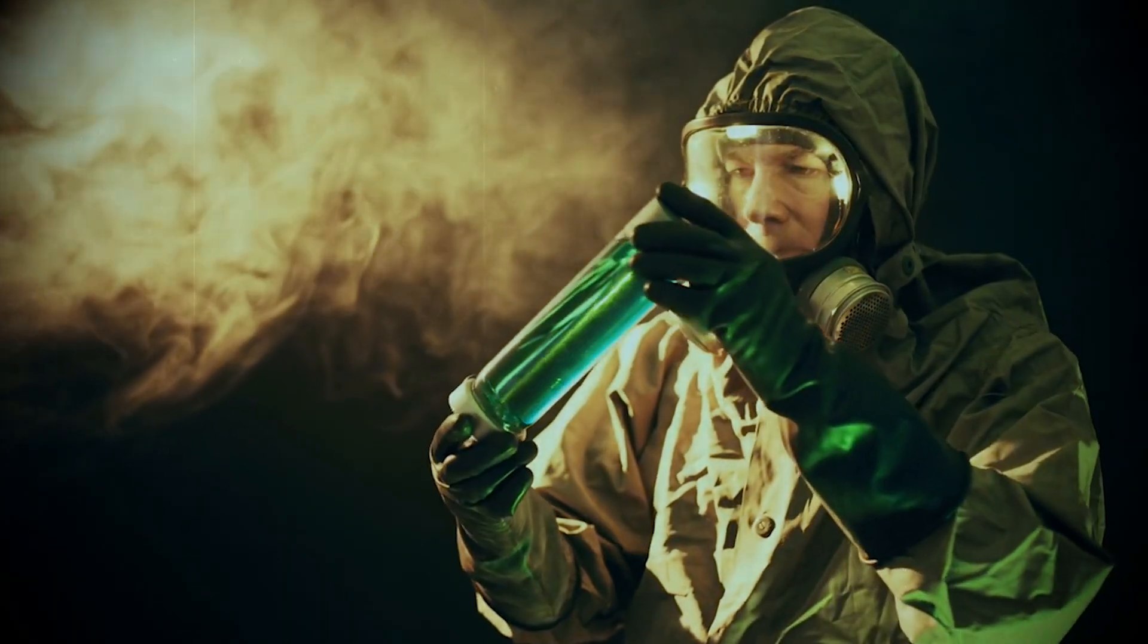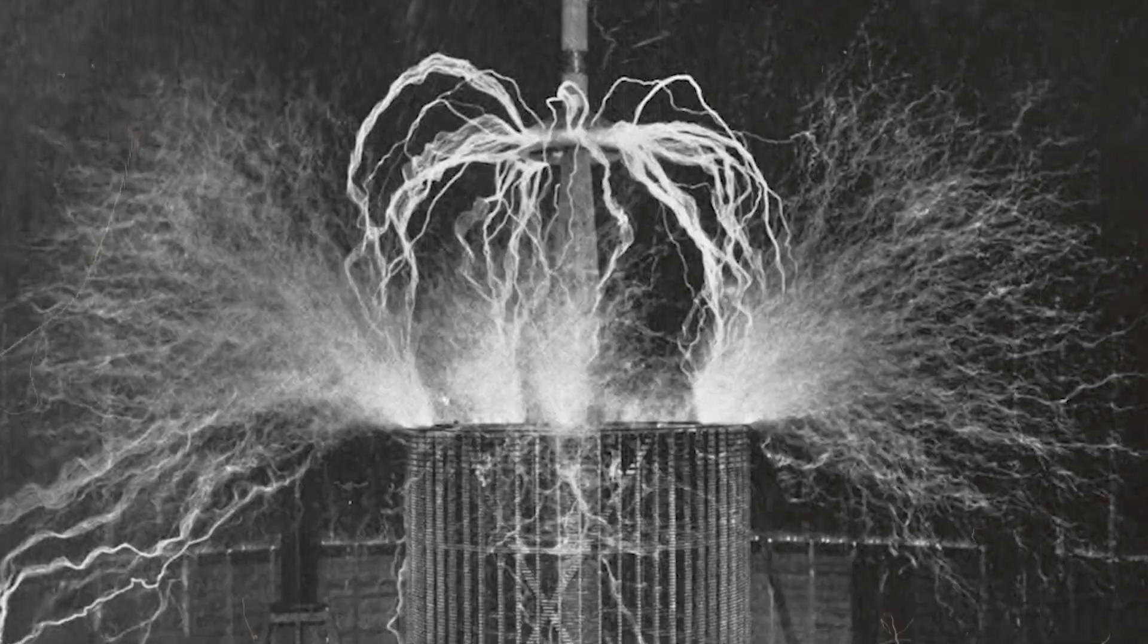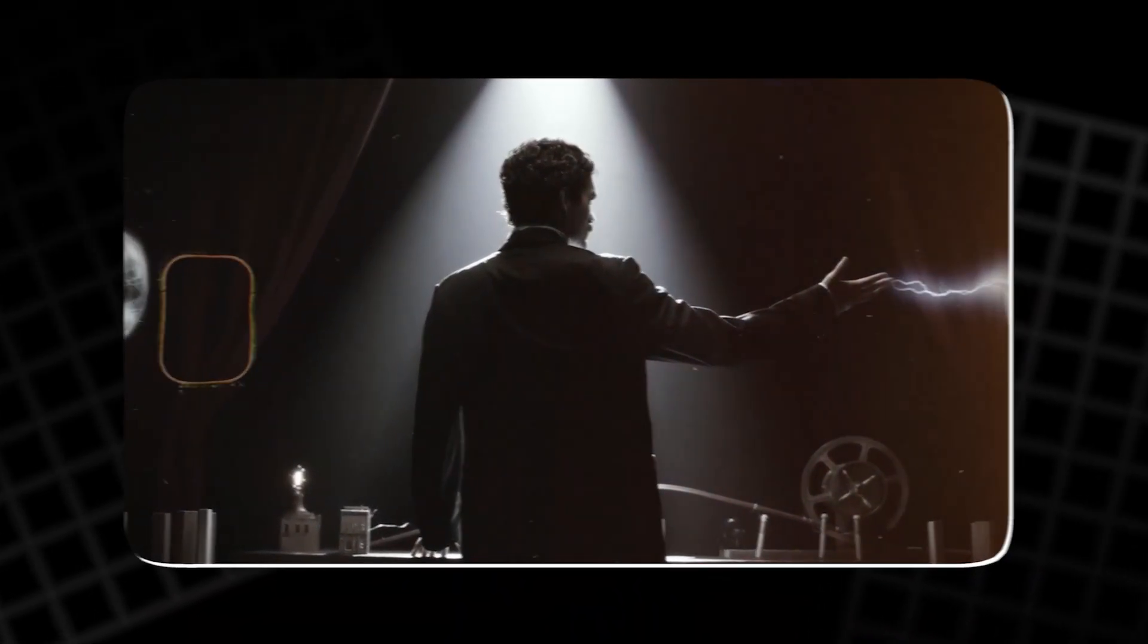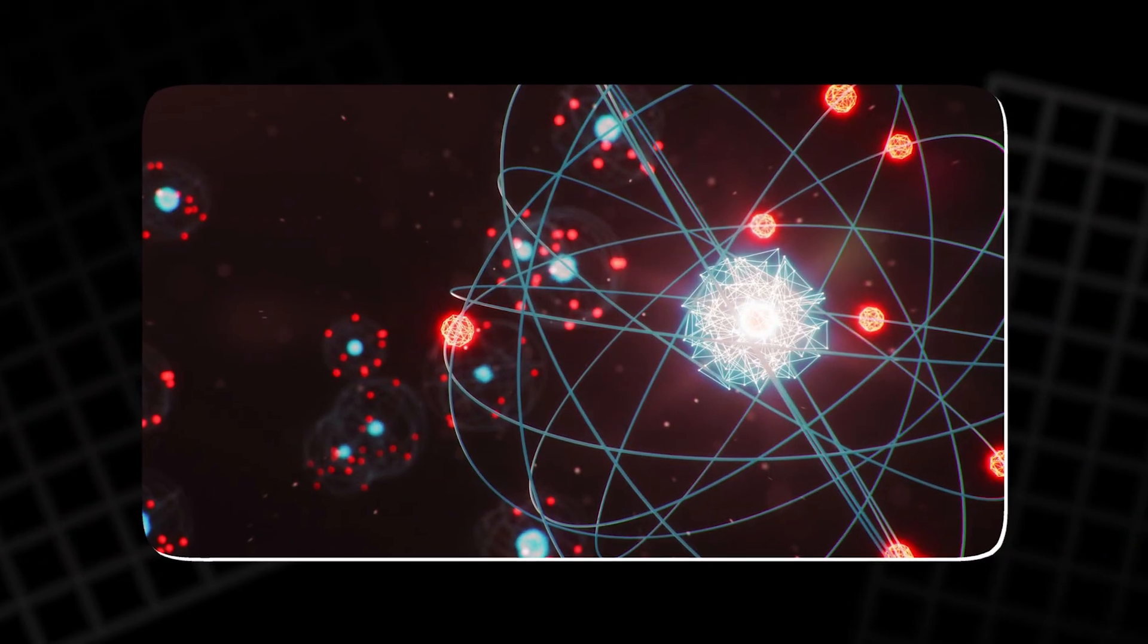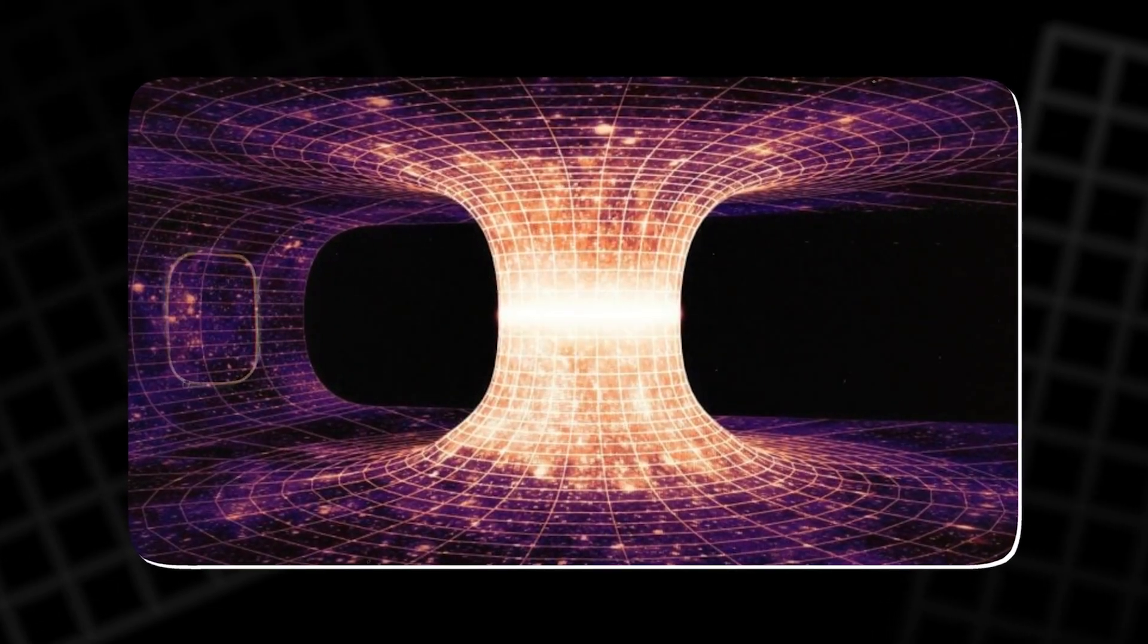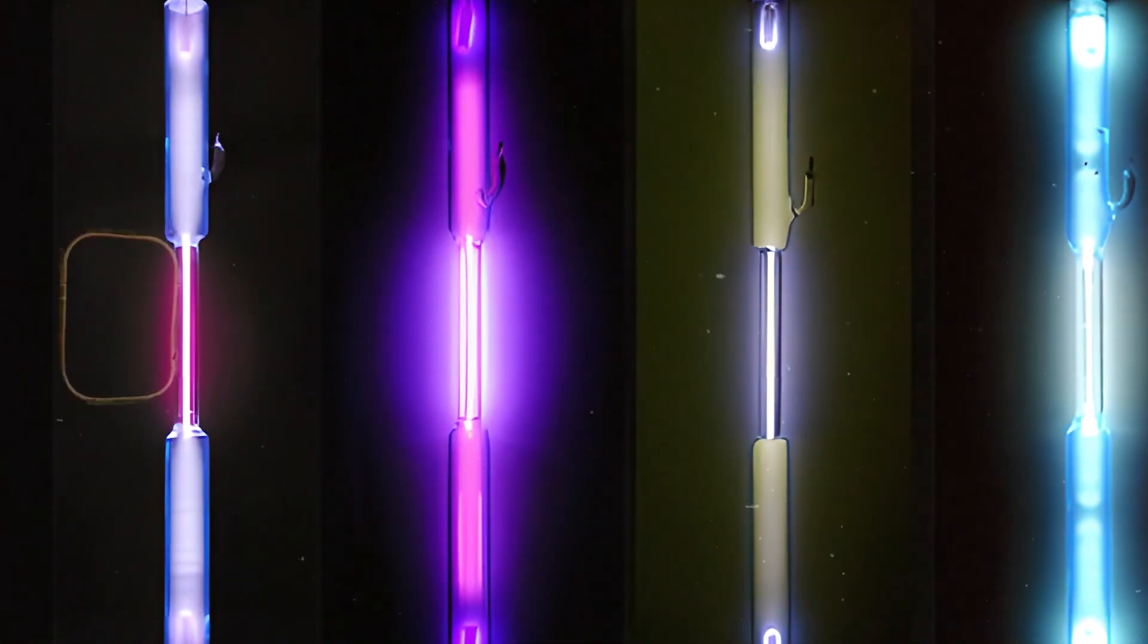In essence, the illumination of gases through the Tesla coil is a small yet profound demonstration of how energy transforms matter. It connects atomic structure, electromagnetic theory, and quantum physics into a single, colorful experience. Each flicker of light reveals a story of electrons, energy, and balance.